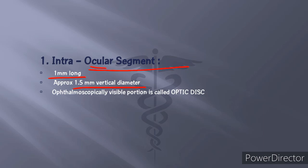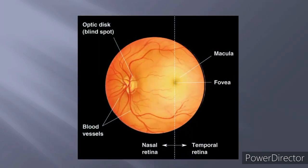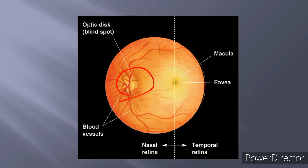The ophthalmoscopically visible portion of the intraocular segment is called the optic disc. It can tell us about different diseases happening in the brain if we see certain findings in the optic disc. It also gives us the physiological blind spot.